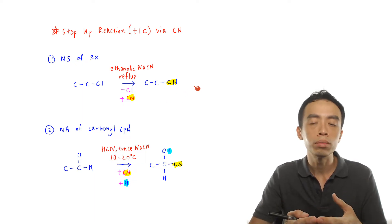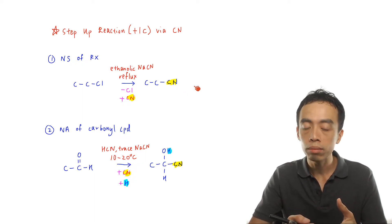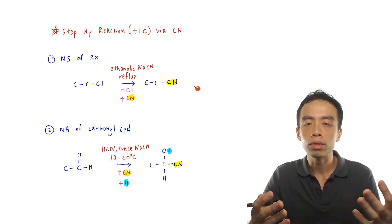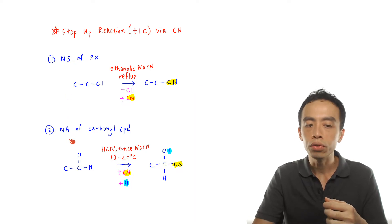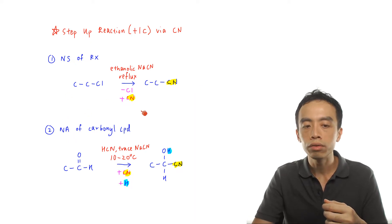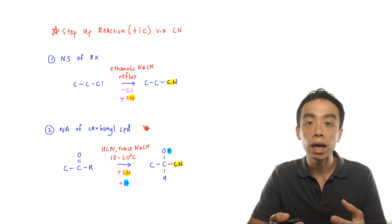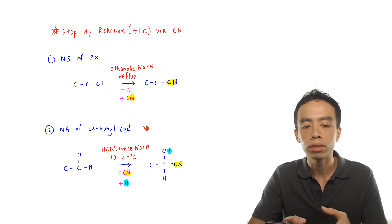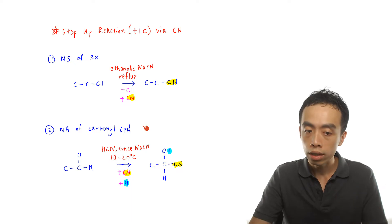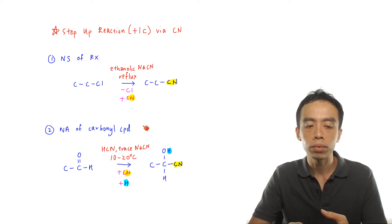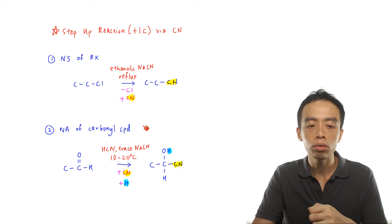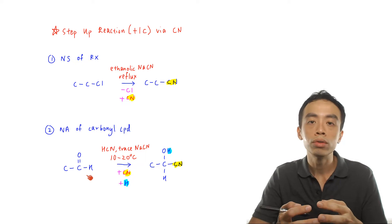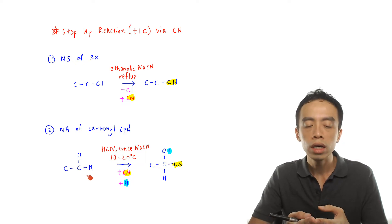Now the second way for me to do a step-up or to introduce a nitrile is to use a nucleophilic addition reaction of carbonyl compounds. So again, we have an example. If I have an aldehyde functional group, ethanal, and I want to introduce the nitrile,